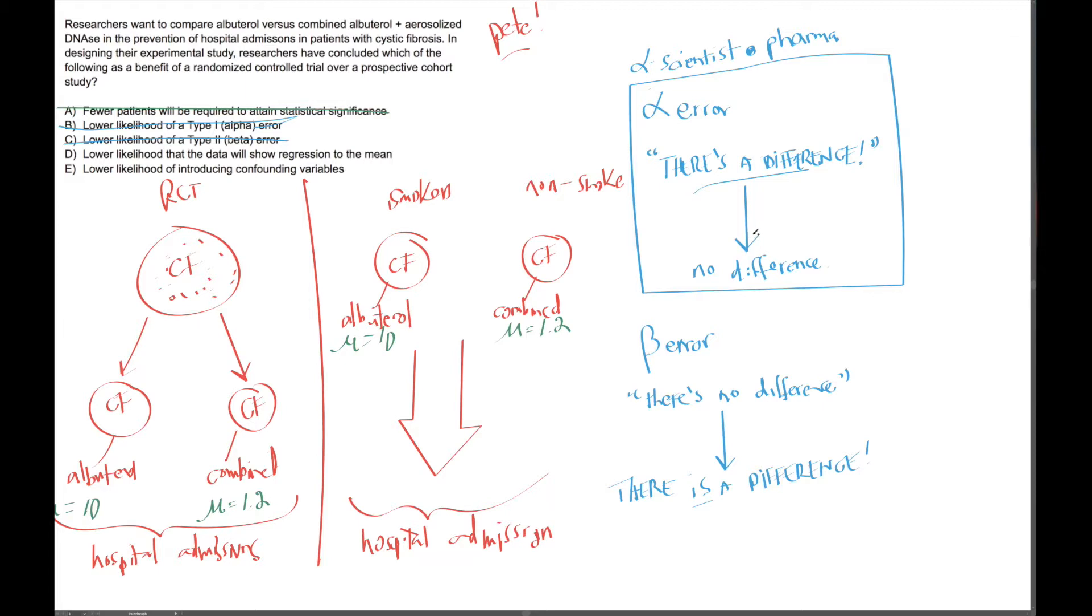So again, technically we say the null hypothesis is the notion that group A and group B are the same. That is, there's no difference between them. So when we reject the null hypothesis, we're essentially saying there is a difference.